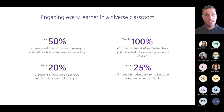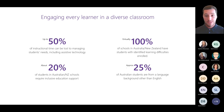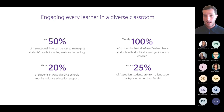By using these tools and knowing what's available for all learners, we level the playing field. It becomes a normal tool — not a separate one — and that reduces stigma. Virtually 100% of schools in Australia and New Zealand have students with identified learning difficulties enrolled, and 20% of students require inclusive education support. We need to embed our time in normalizing these tools.